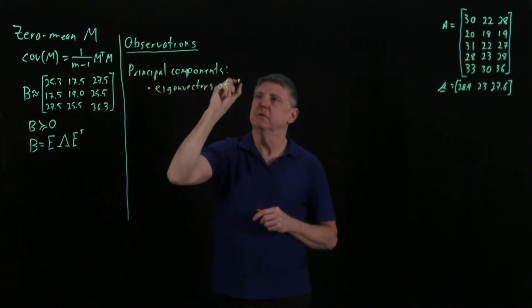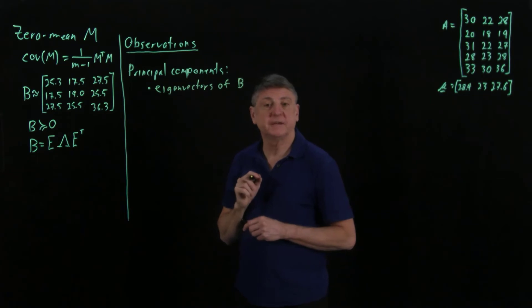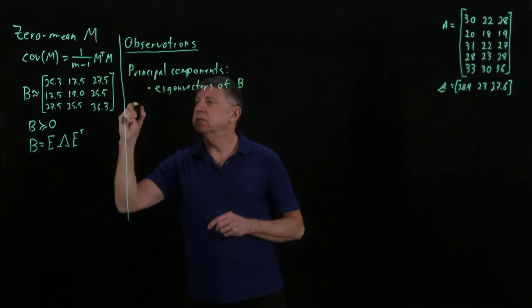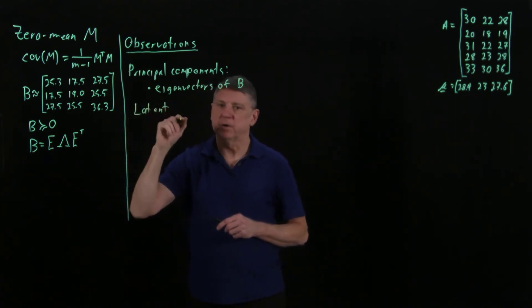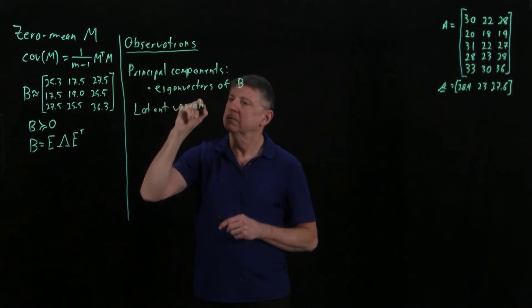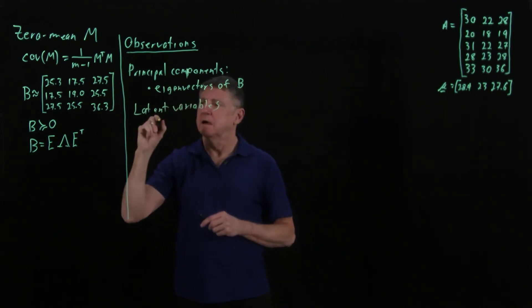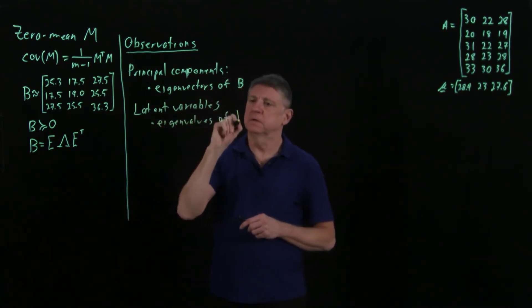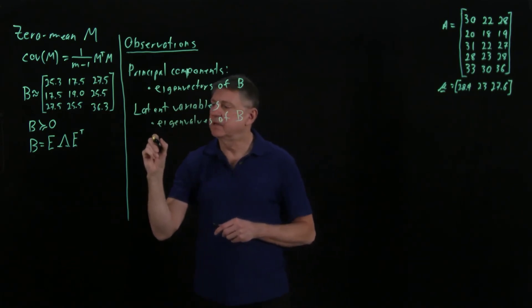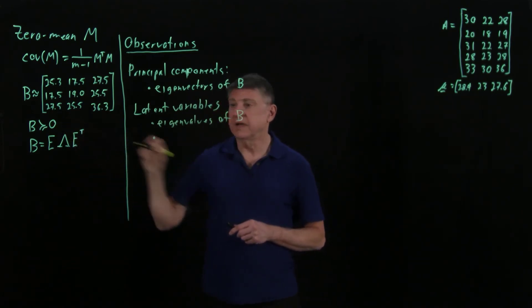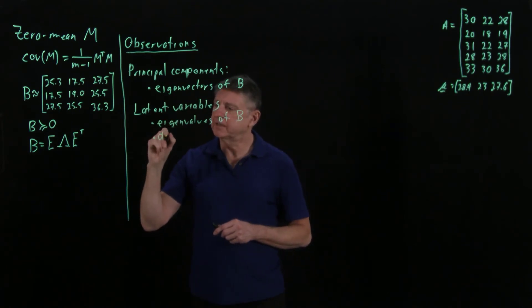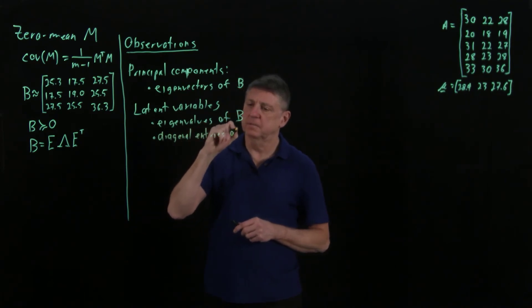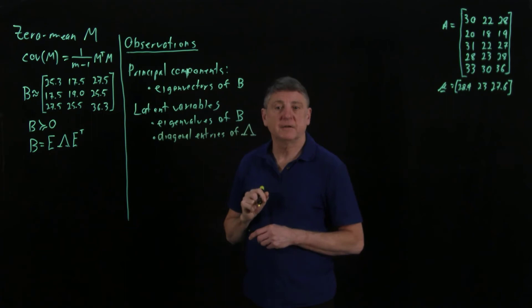The latent variables are the eigenvalues of the covariance matrix, and those from the eigendecomposition are the diagonal entries of the eigenvalue matrix.